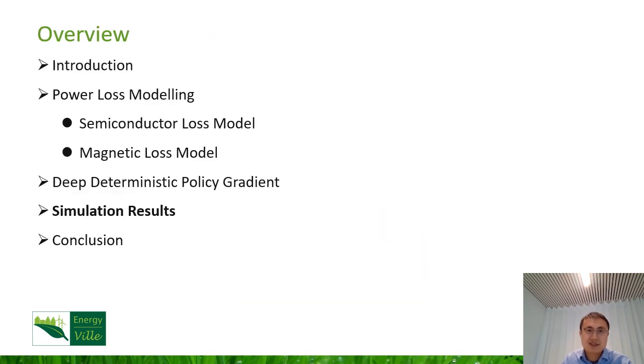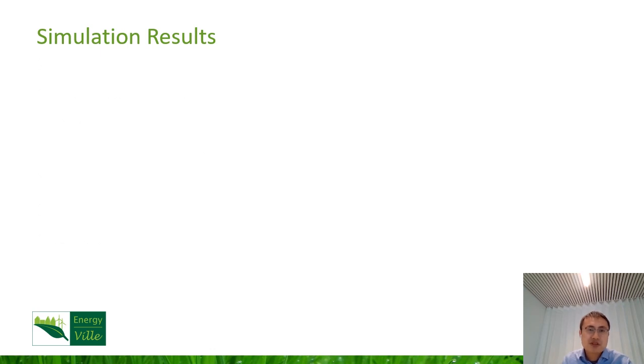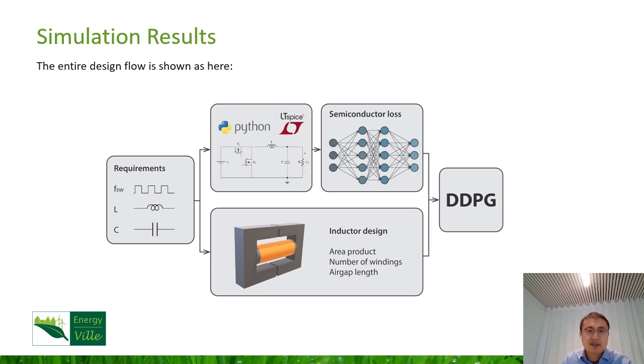Then it's the simulation results. Before showing the final results, here is the entire design flow proposed in this paper. Firstly, the design parameters are frequency, inductance, and capacitance values. Then semiconductor losses are evaluated by SPICE simulation and artificial neural networks. And the inductor is designed by considering the core, the winding turns, and air gaps. Finally, the total loss model is a combination of both semiconductor losses and magnetic losses. After we get the final model, we put it into the DDPG algorithm to train the reinforcement learning algorithm.